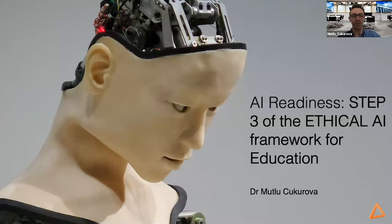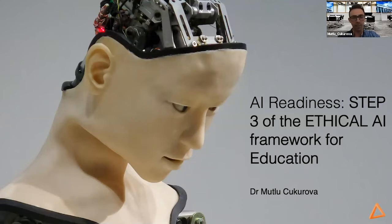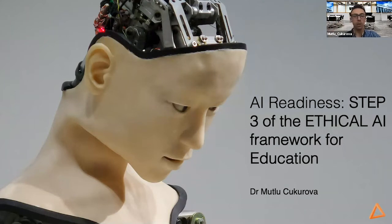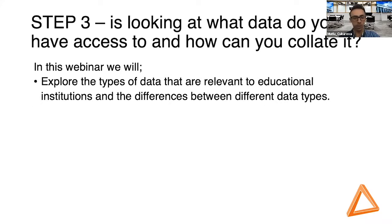Thank you very much Roland, and thank you to everyone who has joined us today. Welcome to our AI business webinar. Today I will be talking about step three of the ethical AI framework with a focus on educators — this is the step where we are thinking about identifying and collating relevant data for our AI solutions. In our last webinar we explored potential challenges that educational organizations might have, and this week we'll cover what type of data we might have access to and how we can collate it to address some of these challenges with the help of AI solutions. I'm going to explore the types of data relevant to educational institutions today and the differences between some commonly used data types.